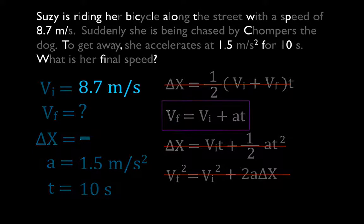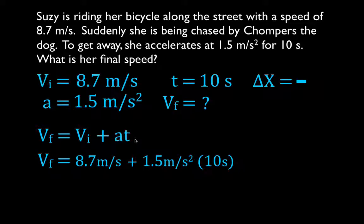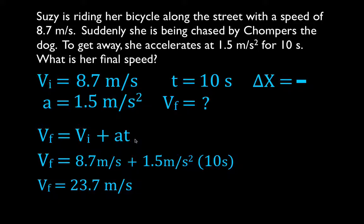The equation is already nicely solved for final velocity: vf equals initial velocity plus acceleration times time. Simply plug the numbers in: 8.7 plus 1.5 times 10. Susie's final velocity after being chased by Chompers the dog is 23.7 meters per second. That's all there is to it. Let's do the next problem.